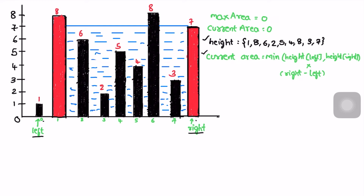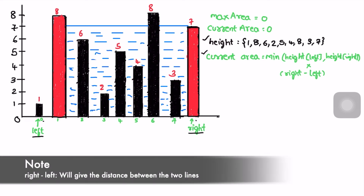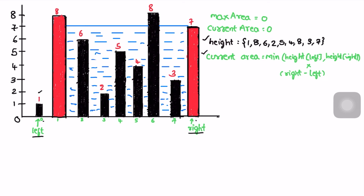The current area will be calculated using this formula: minimum of height of left or height of right, multiplied by right minus left. Height of left is equal to 1 and height of right is equal to 7, so we take 1. Right is pointing at index 8 and left is pointing at index 0, so 1 into 8 is equal to 8. Current area is equal to 8.